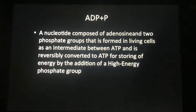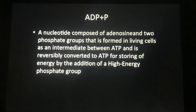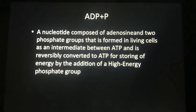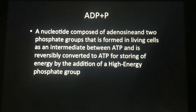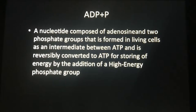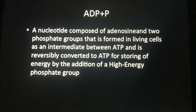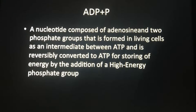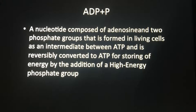I'm Devin. I'm ADP plus P and I'm going to be saying boing it. ADP plus P is a nucleotide composed of adenosine and two phosphate groups that is formed in living cells as an intermediate between ATP, and is reversibly converted to ATP for storing of energy by the addition of a high energy phosphate group.